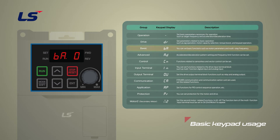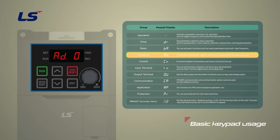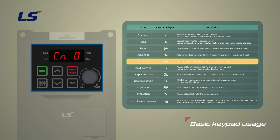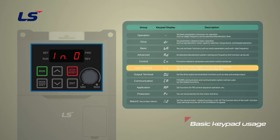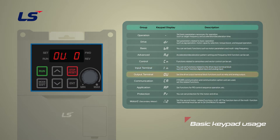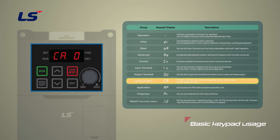These parameters include motor parameters and multi-step frequency parameters. The advanced function group that configures acceleration or deceleration patterns, frequency limits, etc. The control function group that configures sensorless vector related features. The input function group that configures input terminal related features, including digital multifunctional inputs and analog inputs. The output function group that configures output terminal related features, such as relays and analog outputs.